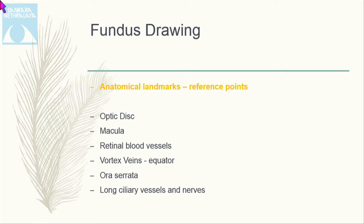In fundus drawing, there are a few anatomical landmarks you should always remember. There is the optic disc, the macula, retinal blood vessels, then the vortex vein — the ampulla of the vortex vein is used to identify the equator — then the ora serrata, and the long ciliary nerves and vessels.